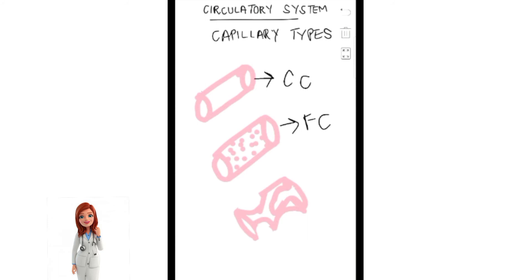The next type is the sinusoidal capillaries. The key features to remember: first, the lumen is much bigger. Second, they have a lot of gaps and pores for maximum exchange. This is mainly a feature of the liver, which is a proper sinusoidal capillary system.